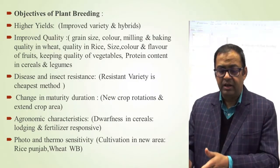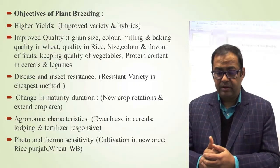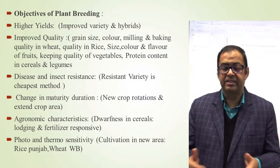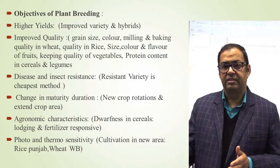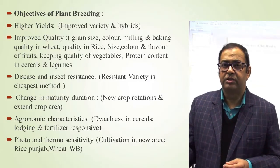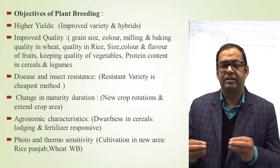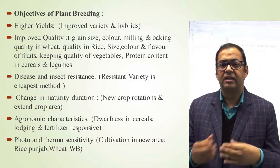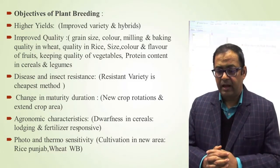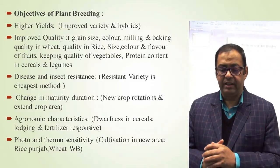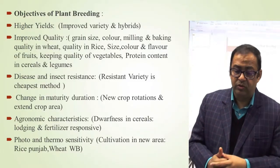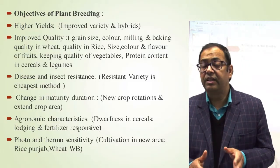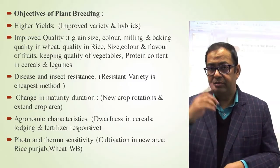Change in maturity duration is another objective. If we change the maturity duration, we can take new crop rotations. For example, we can accommodate wheat and rice in a crop rotation. By changing the maturity we can also extend the crop area. Economic characteristics — dwarfness in cereals is very important, as we saw in the Green Revolution.